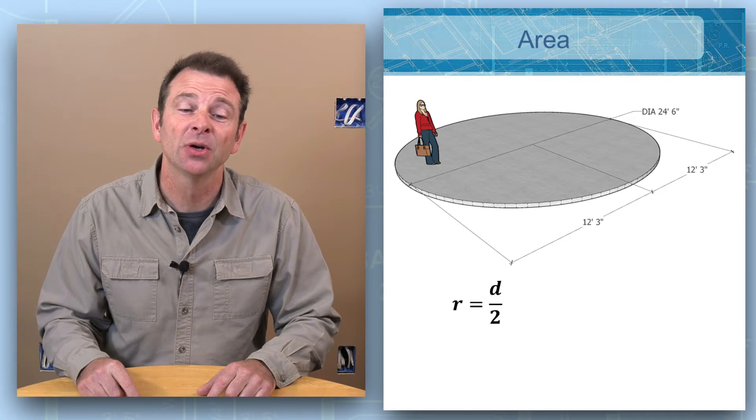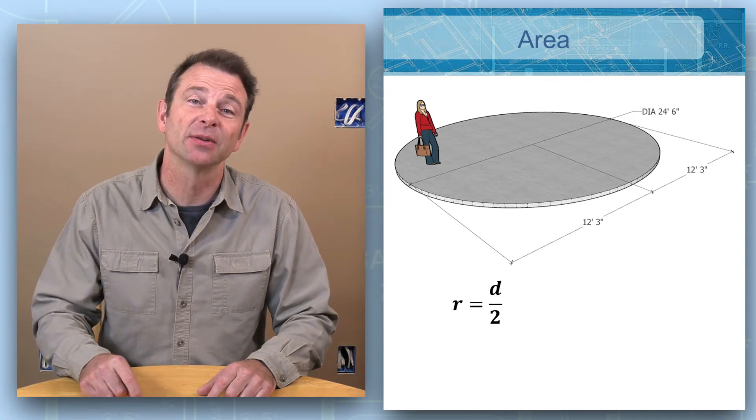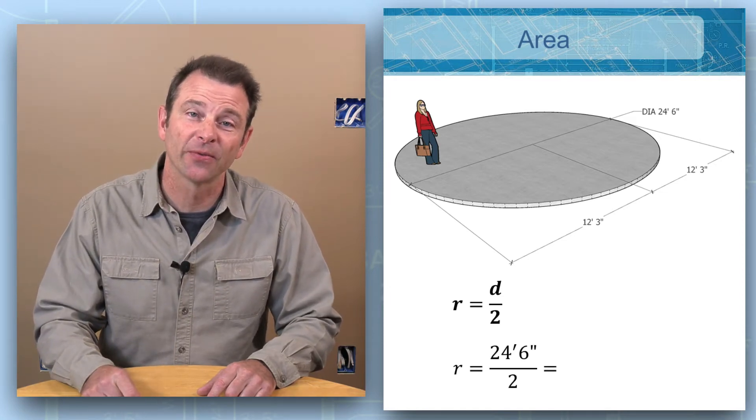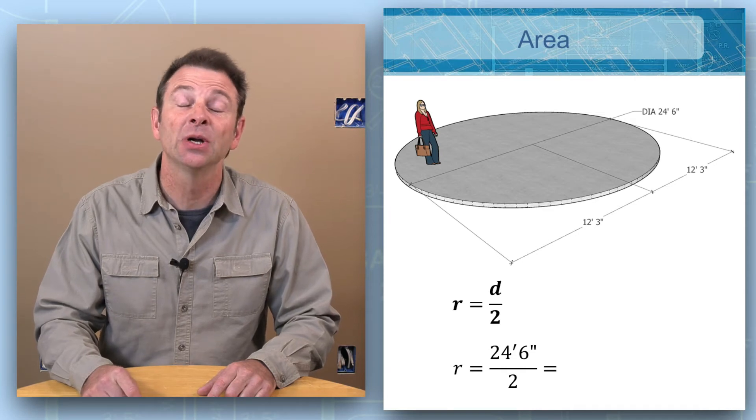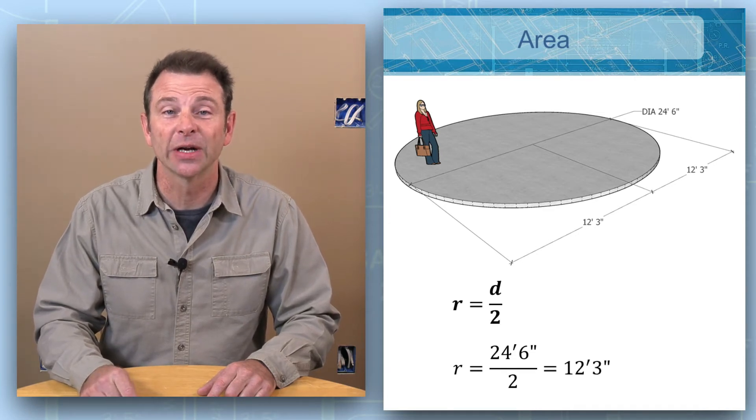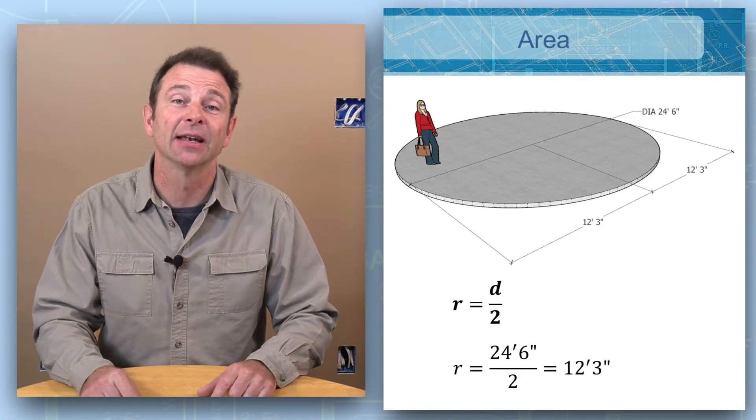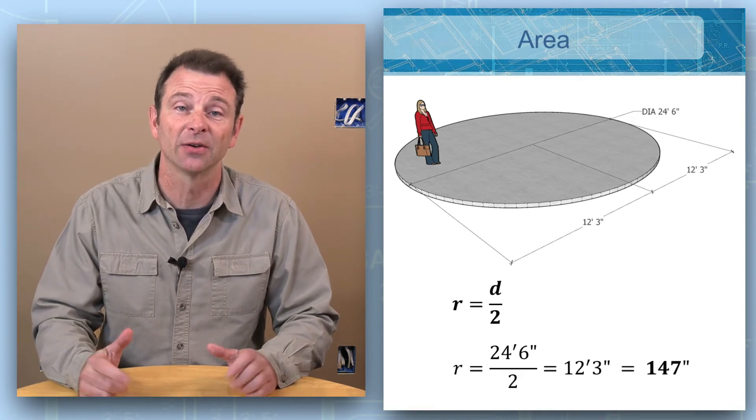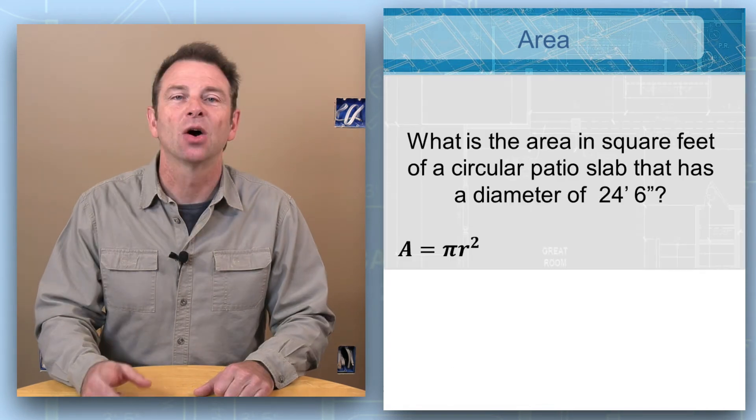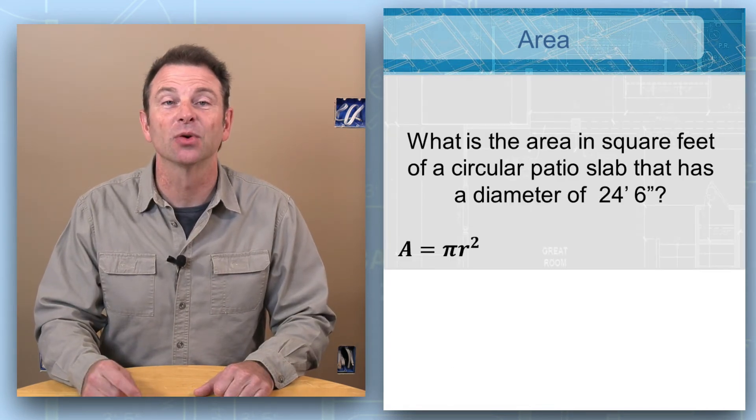Given this formula, r equals d over 2, which is the diameter divided by 2, we can plug in our numbers. That's going to be the diameter of 24 feet 6 divided by 2, which is going to give us 12 foot 3 inches. We'll turn that into inches to help us solve it, and 12 foot 3 inches would be 147 inches.